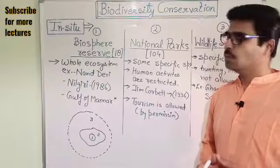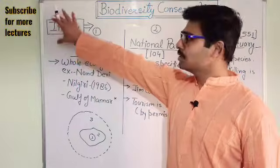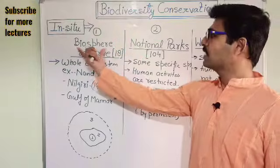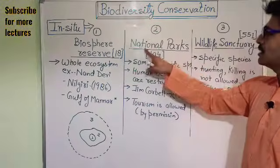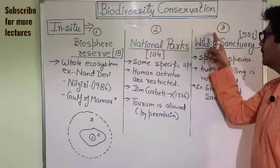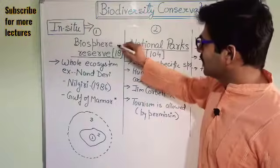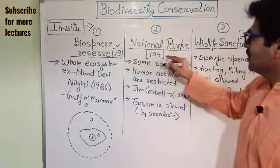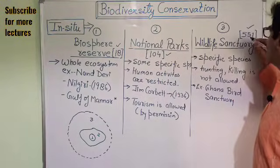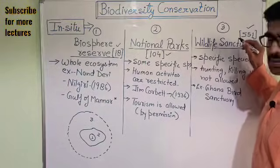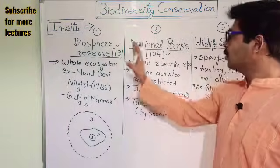Now I will explain in-situ conservation of biodiversity in detail. In India, we have three different approaches. First is the concept of biosphere reserves, second is the concept of national parks, and third is the concept of wildlife sanctuaries. In India we have 18 biosphere reserves, 104 national parks in different states, and 151 wildlife sanctuaries.